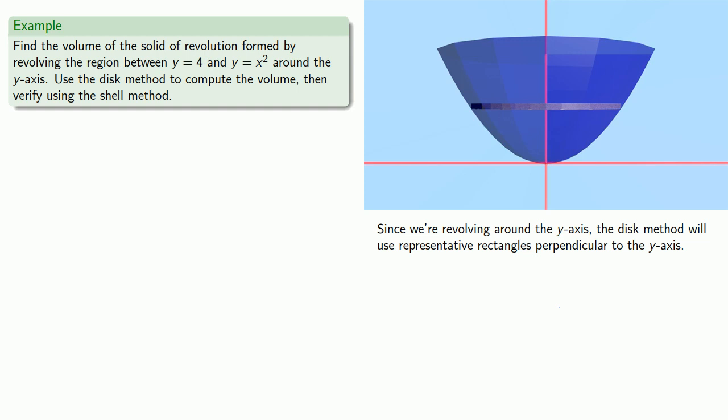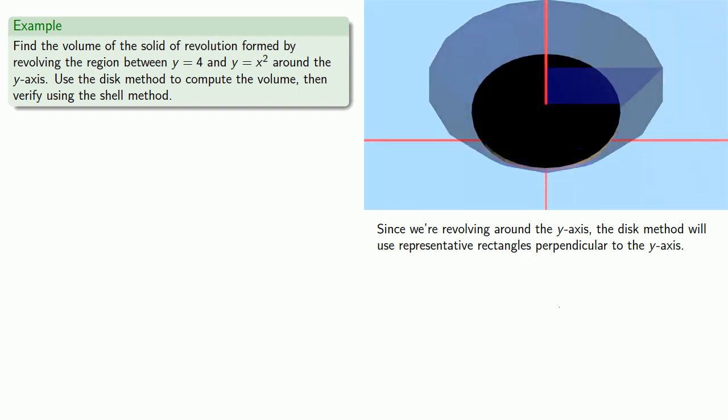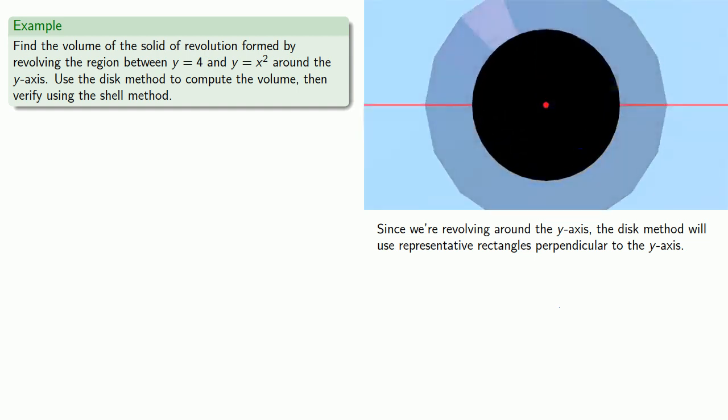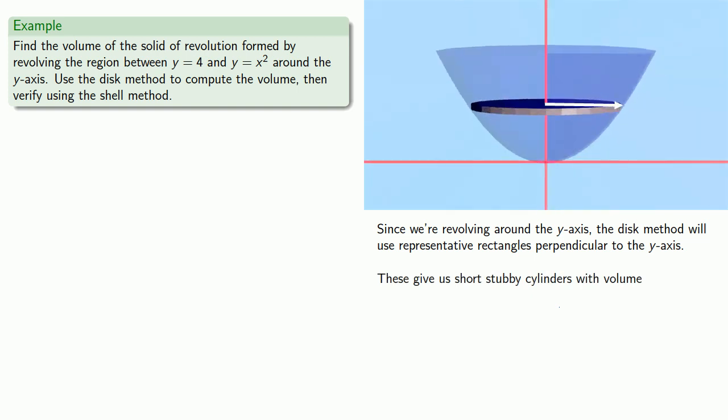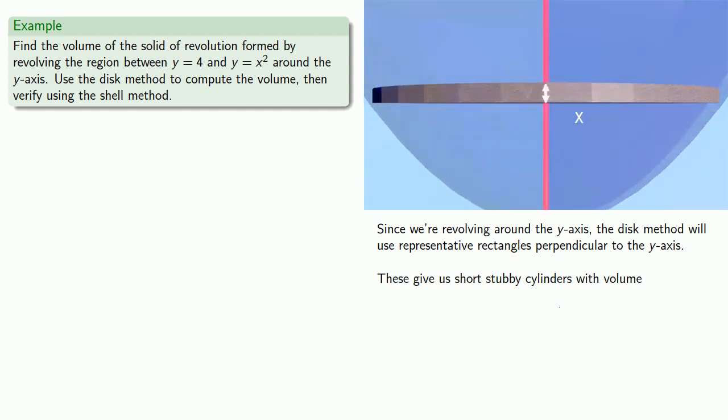And now let's take a look at our representative volume. It's a short stubby cylinder, a disk with radius equal to the x value, and height a tiny portion of the y-axis. So the volume will be pi radius squared times thickness pi x squared dy.